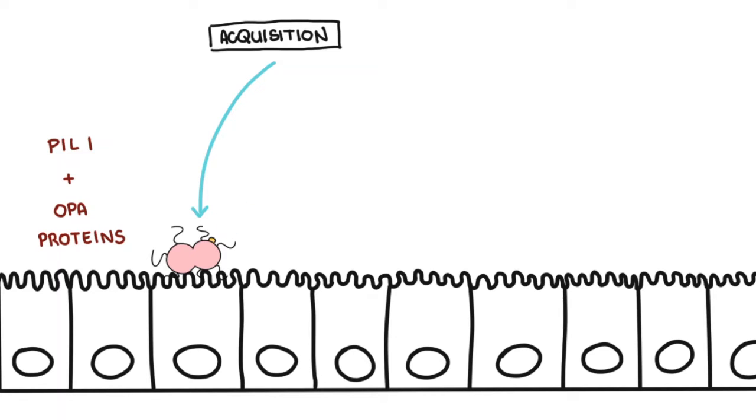Neisseria gonorrhea have many virulent factors, things that help them with their infection. The gonococcal lipooligosaccharide, the LOS, is an endotoxin and causes ciliostasis and sloughing of ciliated epithelial cells, basically damaging the cells.